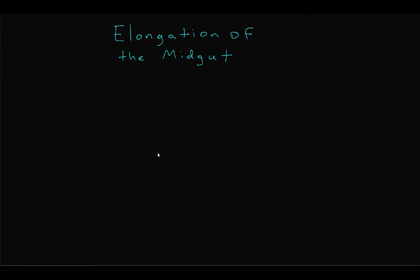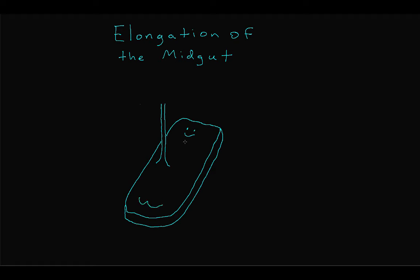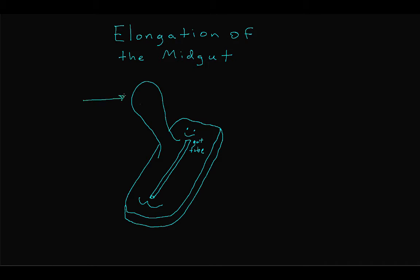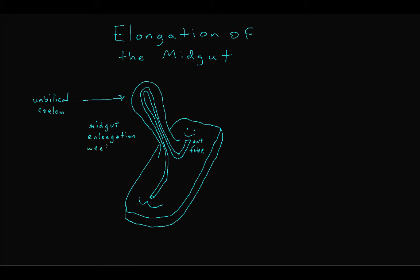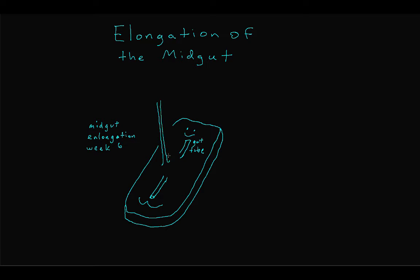During this time, the gastrointestinal tract has developed within the embryo as a single continuous tube structure. Later on in development, around week six, after organ systems have formed, the midgut elongates and leaves through the umbilicus to develop in a space within the umbilical stalk known as the umbilical coelom. After a few weeks of developing in the umbilical coelom, the midgut returns to the peritoneal cavity through the umbilicus around week ten and undergoes rotation and fixation.